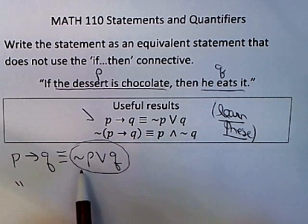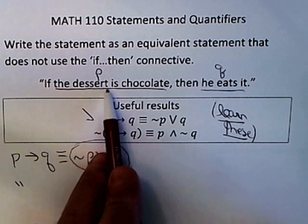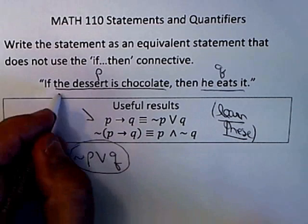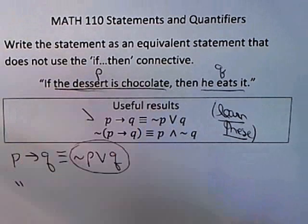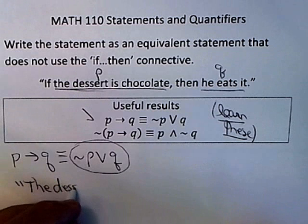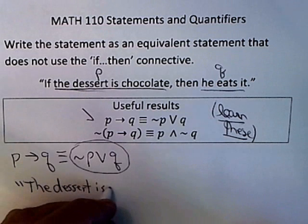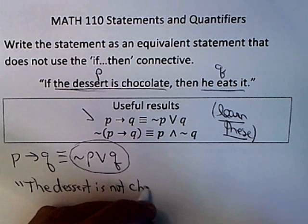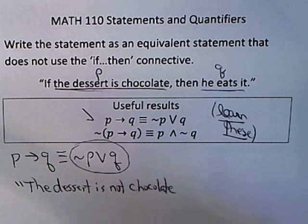So here we go. I take the negation of p. So if the dessert is chocolate is p, I mean not the if part, the dessert is chocolate is p, then the dessert is not chocolate would be not p.